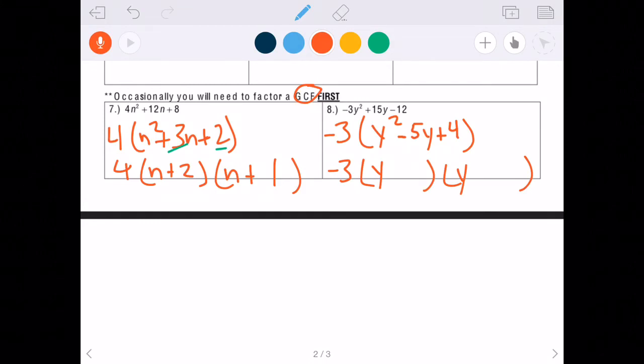So two numbers that multiply to 4 and add to negative 5. So four, we have 4 times 1, or we have 2 times 2. So those are the only two options. Well, it's going to have to be some combination of 4 times 1. Four times one is 5 when you add them together. However, my b term is negative 5. Well, if we have negative 4 times negative 1, negative 4 times negative 1 is 4, and then negative 4 plus negative 1 is negative 5. So that is going to be our answer for that one.